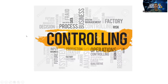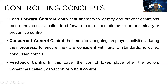Then controlling — the last function of management. When we talk about controlling, there are mainly three types of controlling mechanisms. The first is feed forward control: control that attempts to identify and prevent deviations before they occur. It is called preventive or preliminary control. We have to take some control action before something happens — that is called feed forward control.